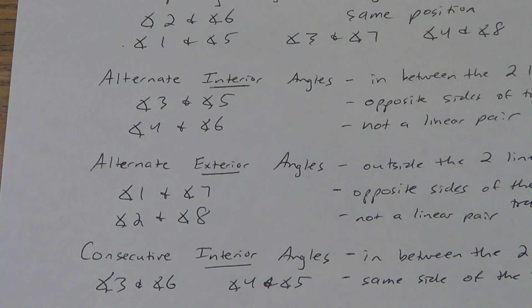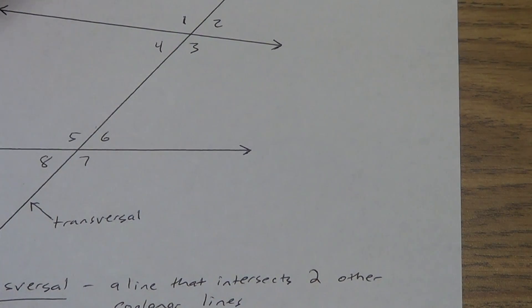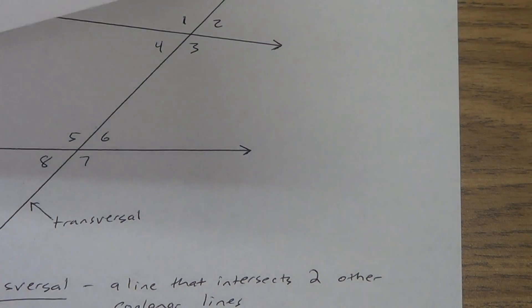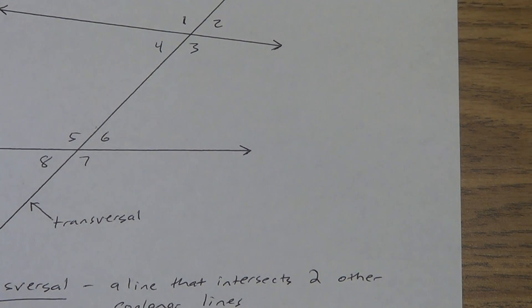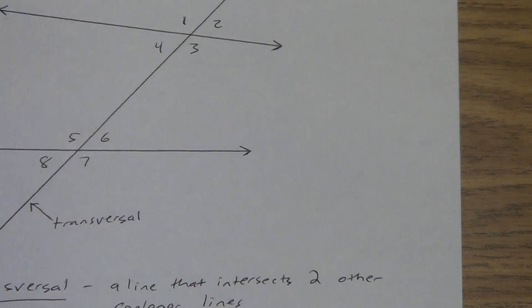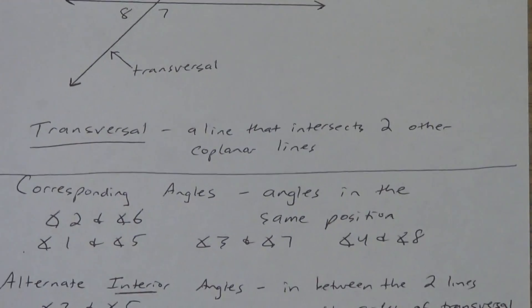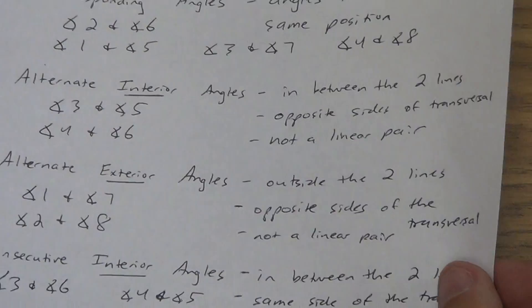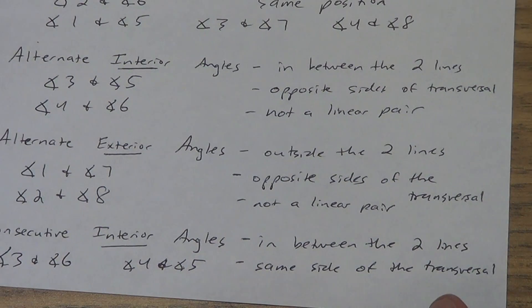That's it for our terms from Lesson 3.1. You need to know these terms because we're going to start using them when we get to Lesson 3.2 and farther into the chapter. Rewind and pause if you need to go back and get any of those definitions. I know I went through these definitions a little bit fast at the end, so go back, pause, write those things down if you need to, make sure you have good notes, and jot down any questions you have so you can ask me in class.